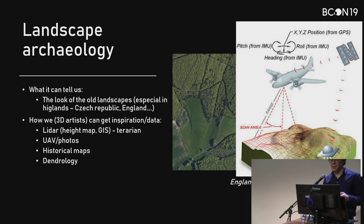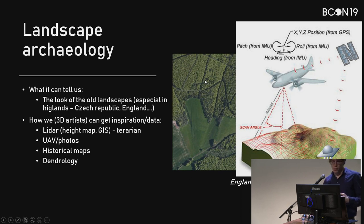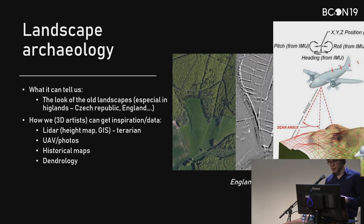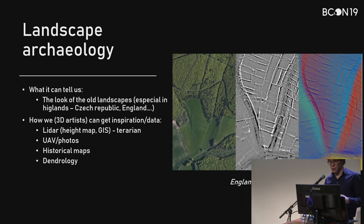LiDAR works like this: a plane has a sensor that sends laser pulses downward and registers returns. Because the plane and sensor know their location and rotation, they can measure the terrain. It's really useful because if you have dense woodland that looks like just trees, in LiDAR you can see there are structures underneath. If you read more about the location you might find, for example, that it's a prehistoric field system in England — it can tell you how the landscape looked in that area, and you can recreate it in your visualization.